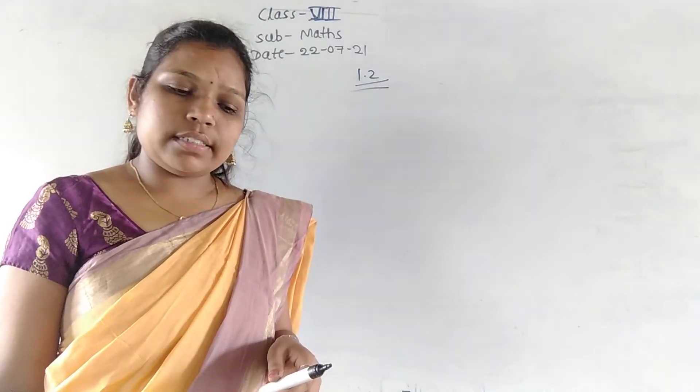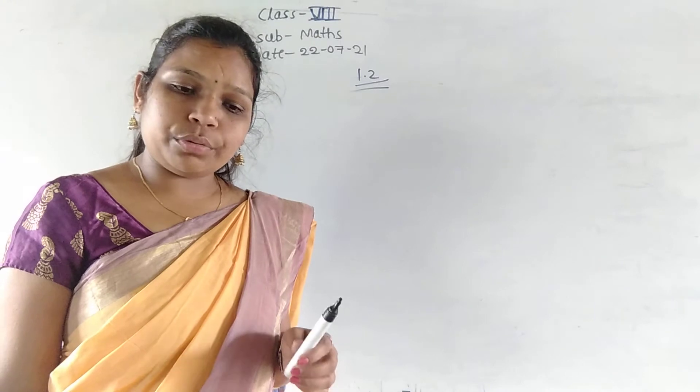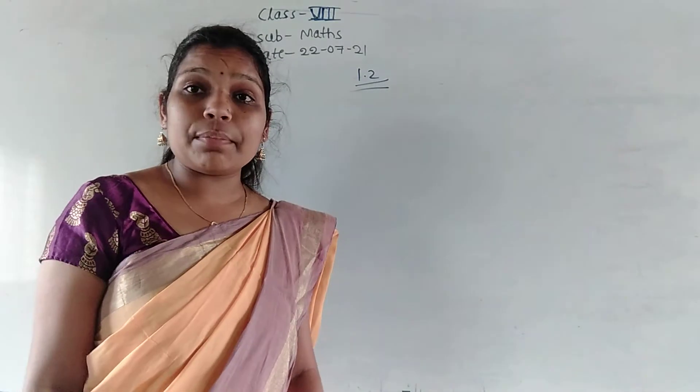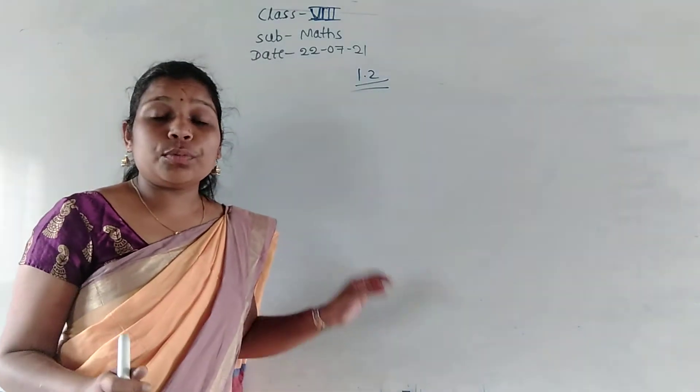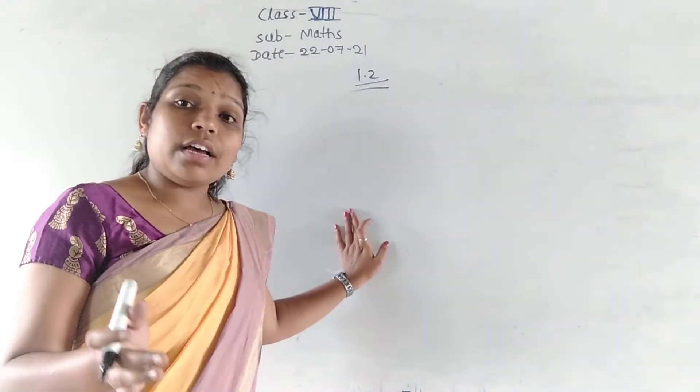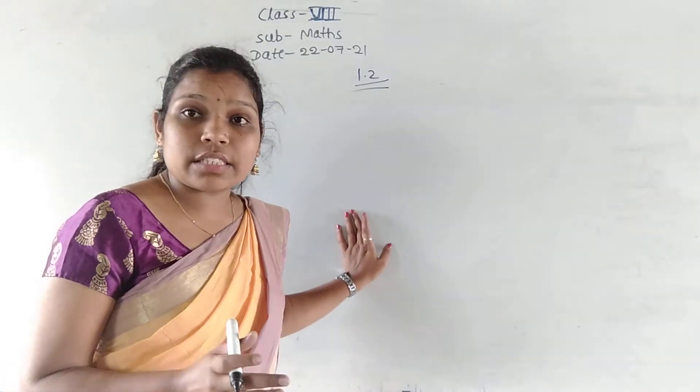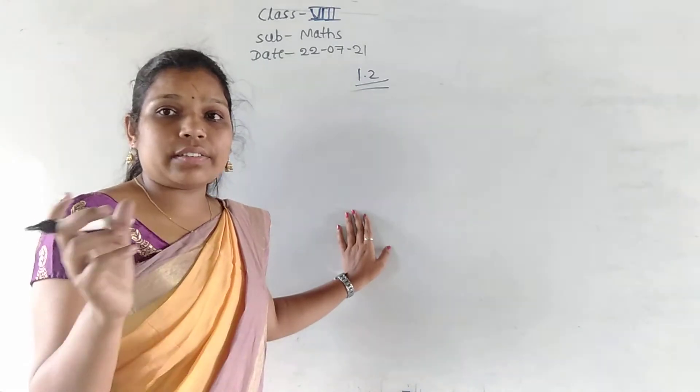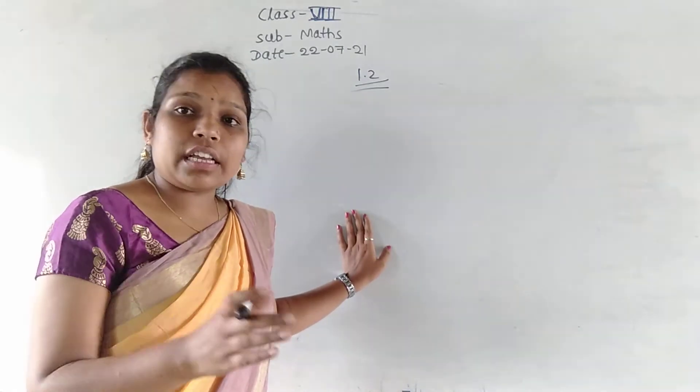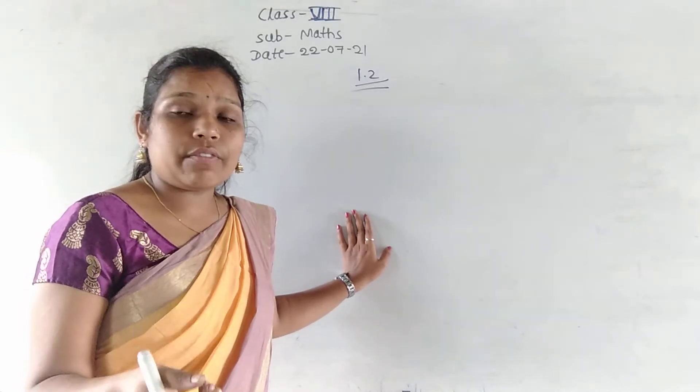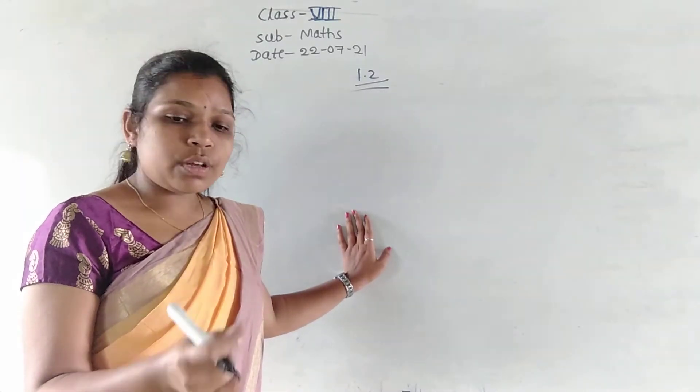Okay. So, we discussed exercise number 1.2 till 8th problem. That is to verify the property x into y plus z. That is the distributive property of multiplication under addition. They have given the x value, y value, and z value. So, first consider the LHS and after that RHS. If you are getting both LHS as well as the RHS equal then we have to say verified.